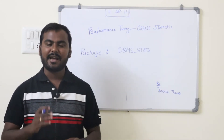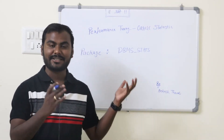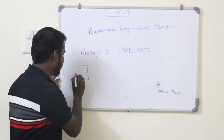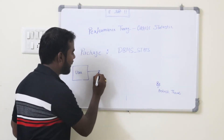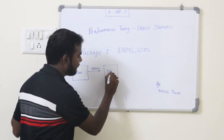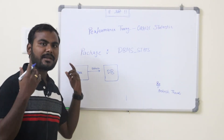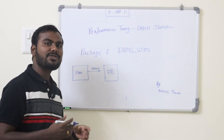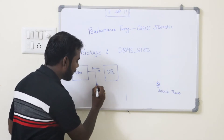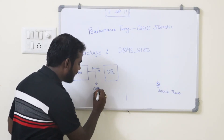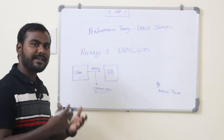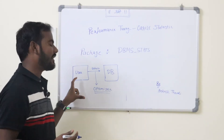To understand this concept, I am going to take one example and you will understand about this concept. So we can assume that we have one user — I am giving the name as 'user' only — who is firing some command. It can be your SELECT command on the database. So whenever a user is trying to fire some command on the database, the execution plan will be created, and that execution plan will be created by the optimizer. Here is the one who is playing an important role — we call it the optimizer.